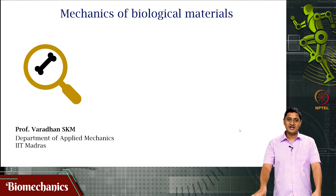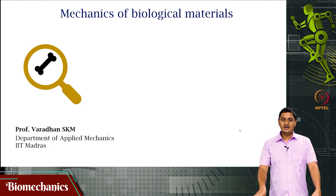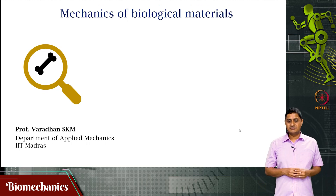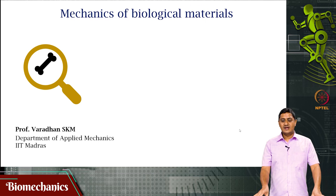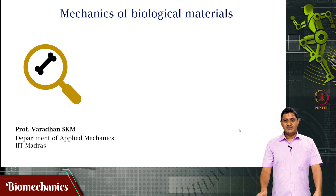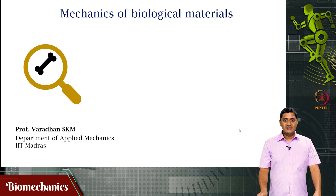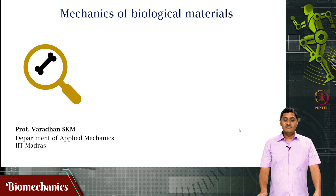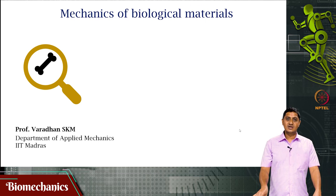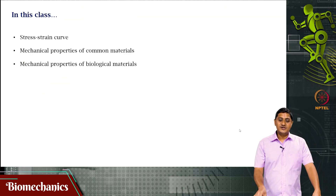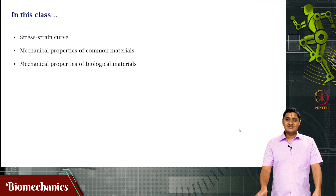Welcome to this video on biomechanics. We have been looking at mechanics of biological materials, in particular bone as a biological material. In the previous video, we defined the elastic modulus, the shear modulus, and the relationship between elastic modulus and shear modulus using Poisson's ratio. We defined the limitations of these in terms of modeling the biological material as a Hookean material. In this video, we will be looking at the stress-strain curve or the stress-strain relationship for biological materials.